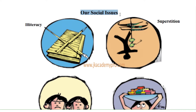Our social issues — issues means the problems that our society faces. Illiteracy means no education, lack of education for many people. Many people still cannot afford to go to school or send their children to school. Therefore, the government and all people should work hard so that everybody gets educated.